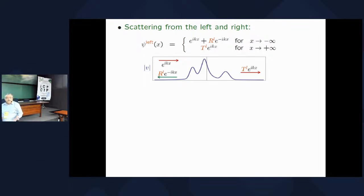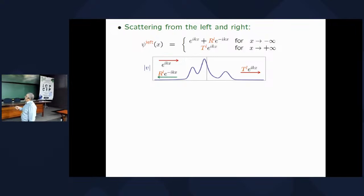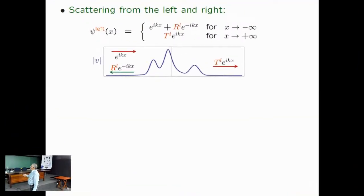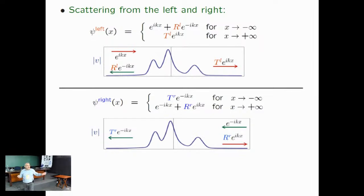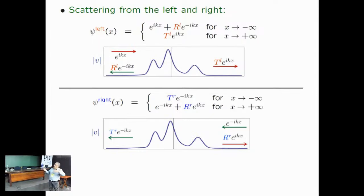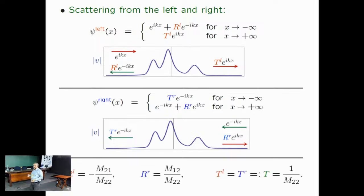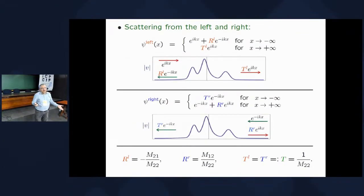Among solutions of the Schrödinger equation there are scattering solutions, which come in two sorts. One is a left-incident scattering solution where you have an incident wave from a source at x equals minus infinity; part of it reflects back and part is transmitted. r and t are the reflection and transmission amplitudes. You can also send the incident wave from the right. Using these choices of A's and B's in the expression for the transfer matrix, you can show that the reflection and transmission amplitudes are given as ratios of entries of the transfer matrix. Therefore, if you can compute the transfer matrix, you have solved the scattering problem — it is if and only if.